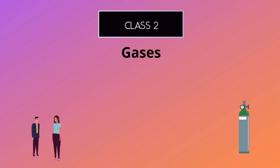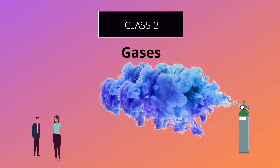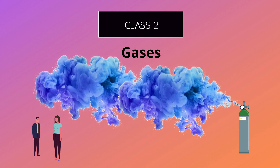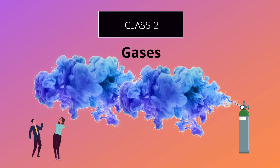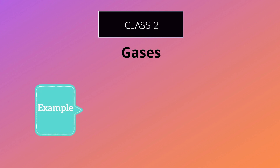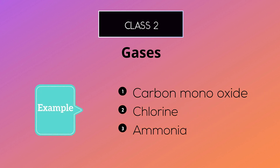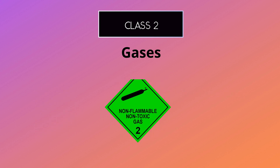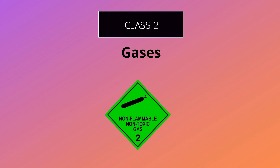Toxic gases refers to gases that are harmful or poisonous to living organisms. Exposure to toxic gases can cause health problems or even death. Examples of toxic gases include carbon monoxide, chlorine, and ammonia. The symbol for gases is a gas cylinder, with the subcategory indicated by an additional symbol on the label.